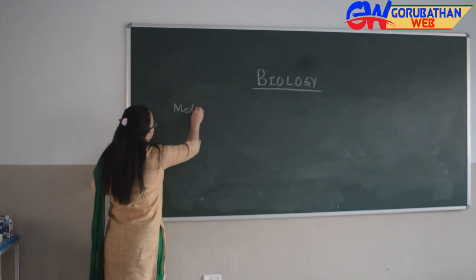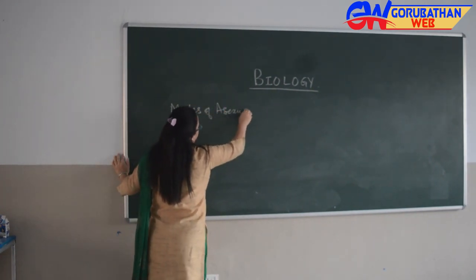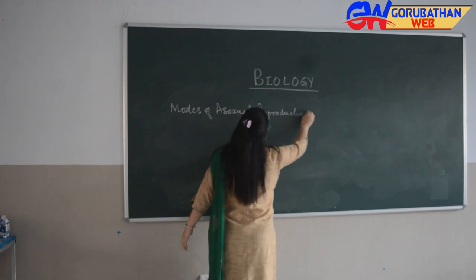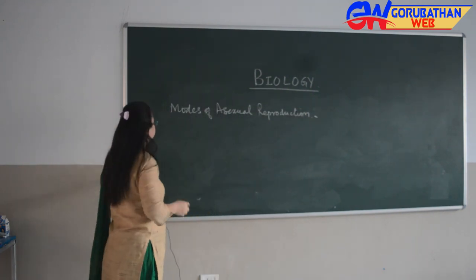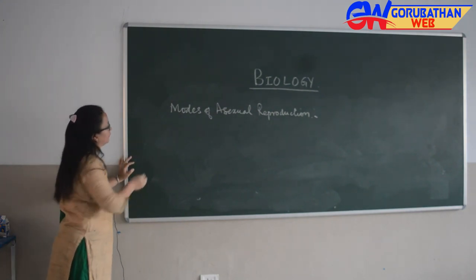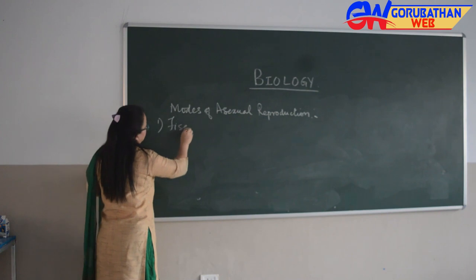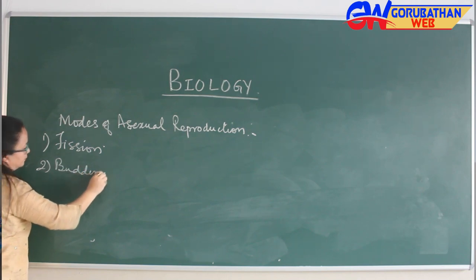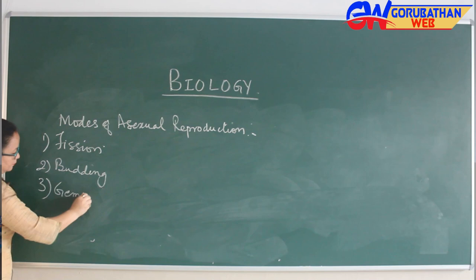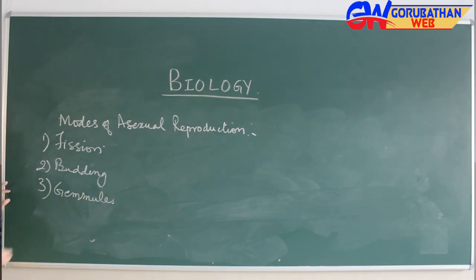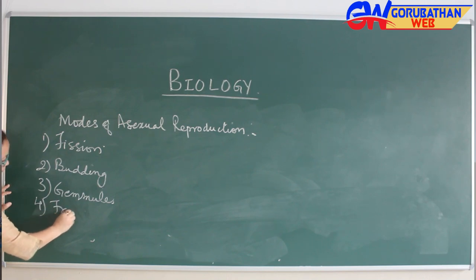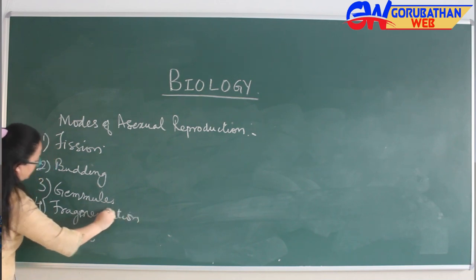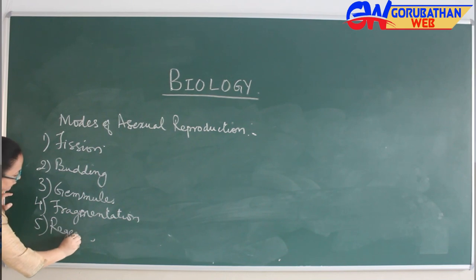Now the modes of asexual reproduction. There are five types of asexual reproduction. One is fission. Second is budding. Third one is gemmules. Fourth is fragmentation. And fifth one is regeneration.